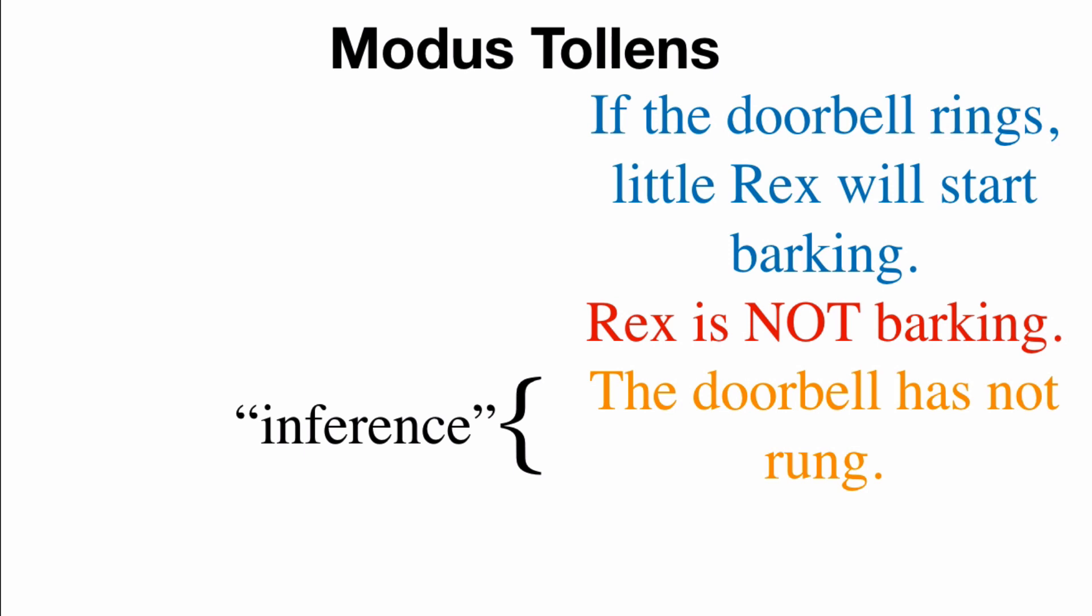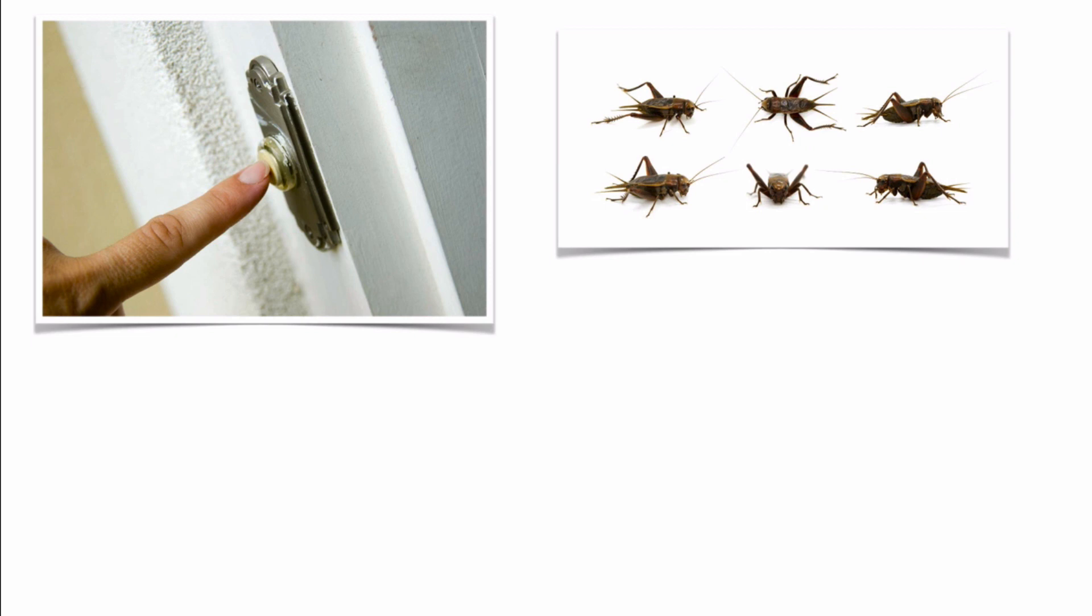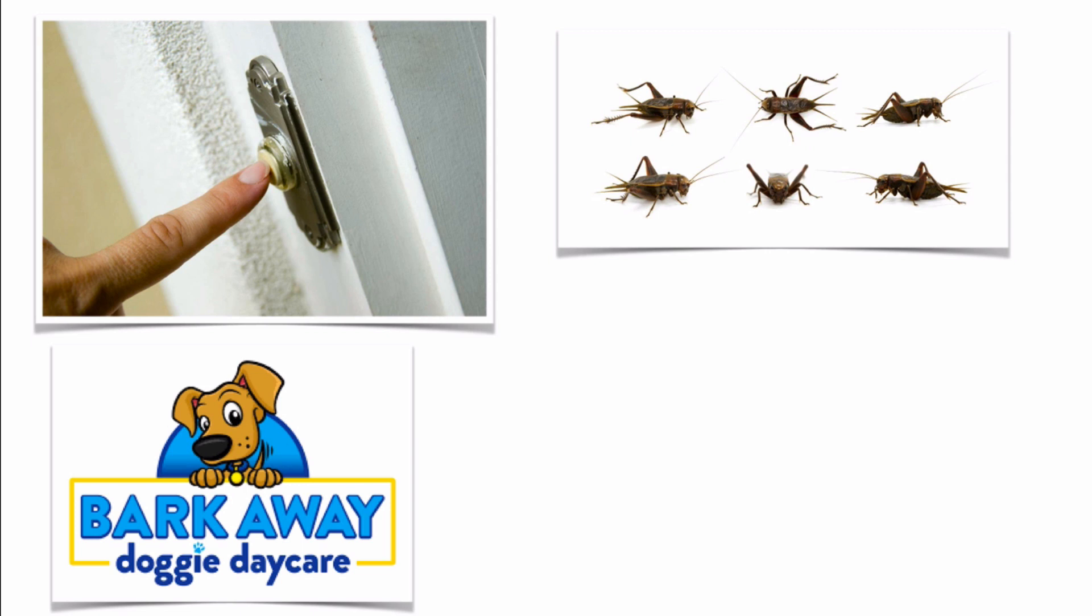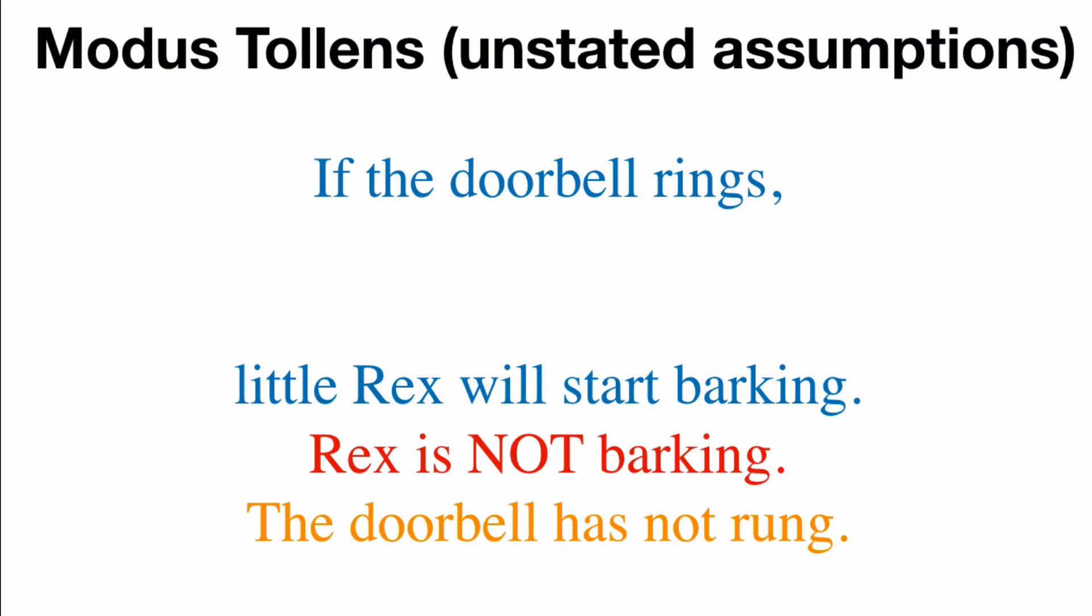Let's go back to the little Rex example. If the doorbell rings, little Rex will start barking, but Rex is not barking. So we can infer that the doorbell has not rung. So let's do a scenario. You ring the doorbell, but we don't hear Rex barking. Something is amiss. Well, it could be that Rex is actually not home. Rex might be at doggy daycare. Or Rex is home, but he's recovering from anesthesia. So there's a couple possibilities of why Rex is not barking, even though we had that logical structure.